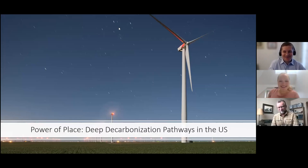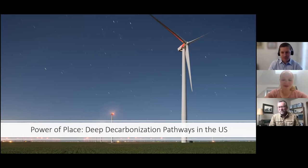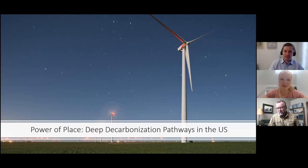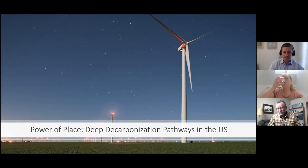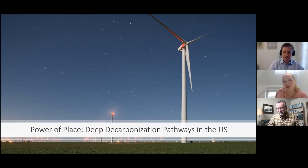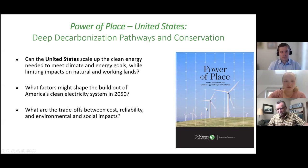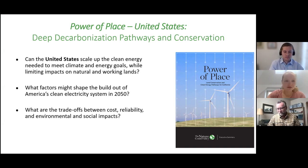Thank you very much, Stephanie. I'm going to talk about a project that's at the opposite end of the continuum in terms of timeframe. The work we've just been talking about — Site Wind Right — is really about how we influence where projects are going now, how investors, developers, and regulators think about where the best places are for infrastructure in the near term over the next few years. But we wanted to use similar data to ask the bigger question: can we actually get to a net zero future without major environmental impacts? And what are the trade-offs as we pursue decarbonization pathways to net zero in terms of impacts on the environment, cost, and reliability of the energy system?